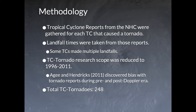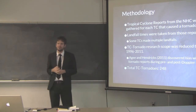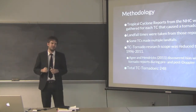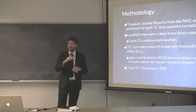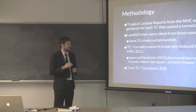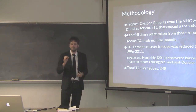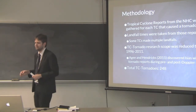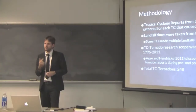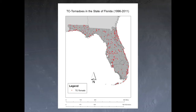Some TCs had multiple landfalls — for example, Tropical Storm Fay in 2008 had four landfalls in Florida, which made it tricky to determine which landfall the tornadoes were related to. The TC tornado research scope was then reduced to a 15-year period because a paper by Agee and Hendricks found a bias in tornado reports between the pre-Doppler and post-Doppler era. In the end, we had 248 reported tornadoes across the state for this time period.